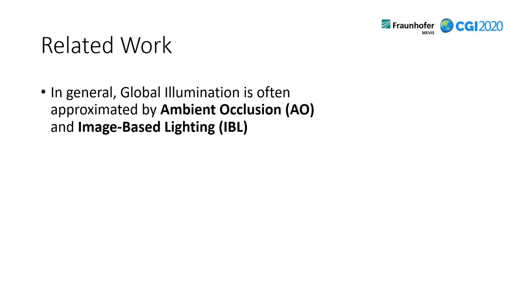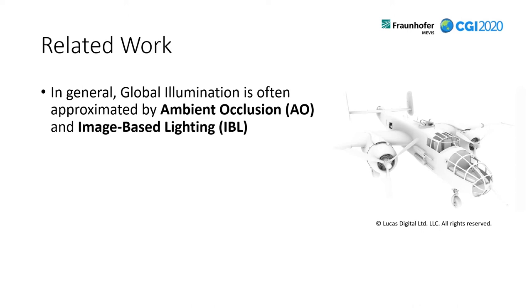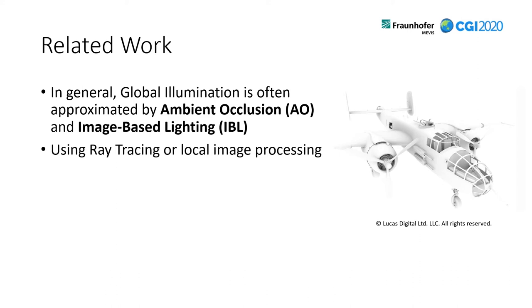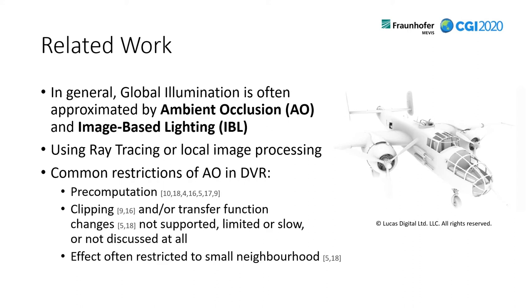Let's have a look at the related work and see what the current state of the art is in research. In general, global illumination is often approximated by ambient occlusion and image-based lighting. In the image on the right you can see a simple scene rendered with only ambient occlusion — something like the self-shadowing between objects. Usually ambient occlusion is computed by using ray tracing or local image processing. Common restrictions of ambient occlusion are pre-computation requirements, and that clipping and transfer function changes are not supported, or when they are supported they are quite slow.